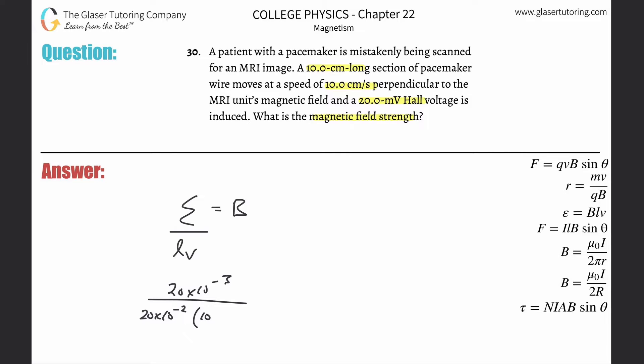We need that in meters, so take 10 and multiply by 10 to the minus 2. Just plug and chug: 20 times 10 to the minus 3 divided by 20 times 10 to the minus 2 times 10 times 10 to the minus 2.